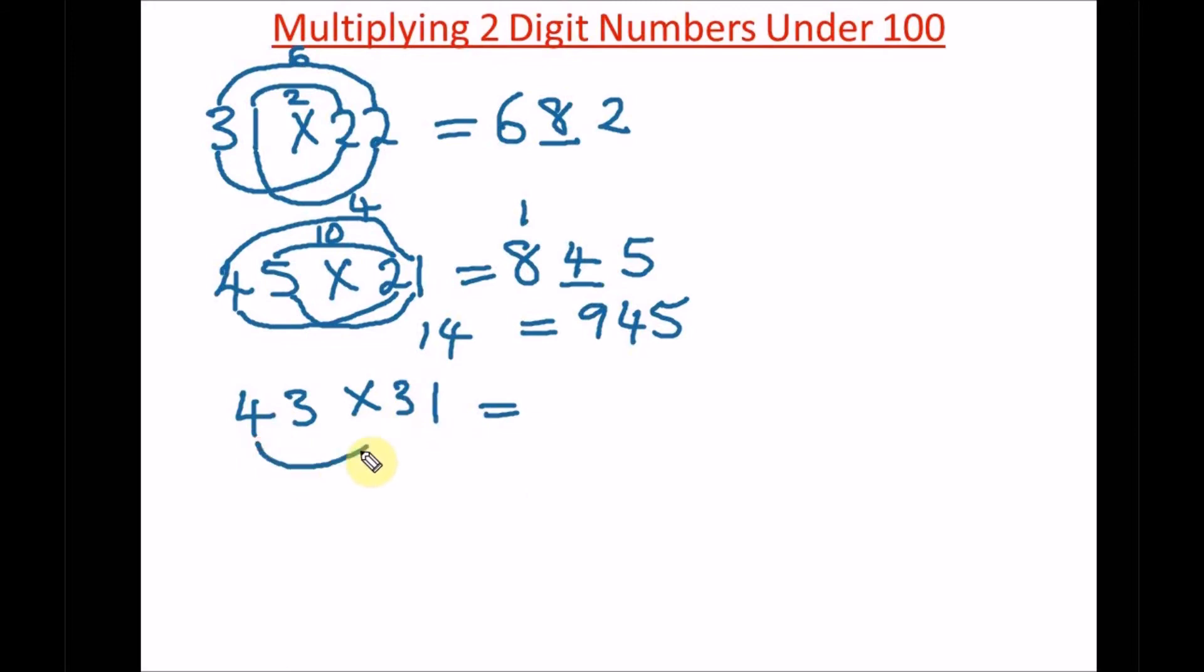4 times 3 gives us 12. Leave a space. 3 times 1 gives us 3. Next, 3 times 3 is 9, and 4 times 1 is 4. 4 plus 9 gives us 13. Write down 3 and carry 1. Add 1 plus 2, and we're left with 1333 as our final answer.